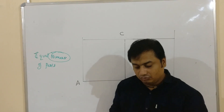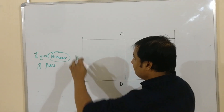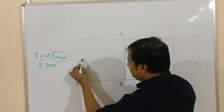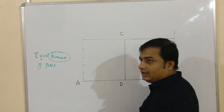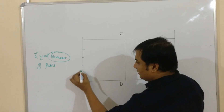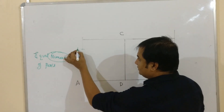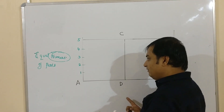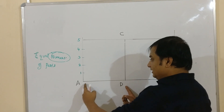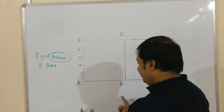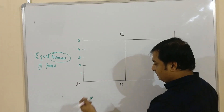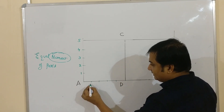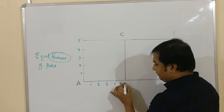Let's divide into 5 equal parts. When you divide the vertical line into 5 equal parts, number them 1, 2, 3, 4, and 5. Similarly, divide line AD into 5 equal parts and number them 1, 2, 3, 4, and 5. The numbering should follow the same order on both lines.